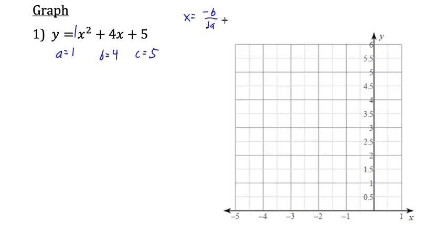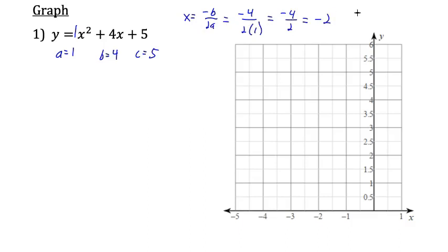x equals negative b over 2a, or in other words the opposite of b over 2a. So that would be negative 4 over 2 times 1, because b is 4 and a is 1. Working that out, we get an x-value of negative 2. That's the x-coordinate of the vertex. So right now we know the vertex is at negative 2 and then some unknown y.